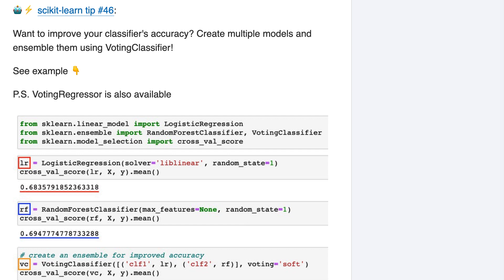All right, let's take a look at the code. First, we've got a logistic regression model, and we're calculating the cross-validated accuracy by passing the model X and Y to cross-val score.